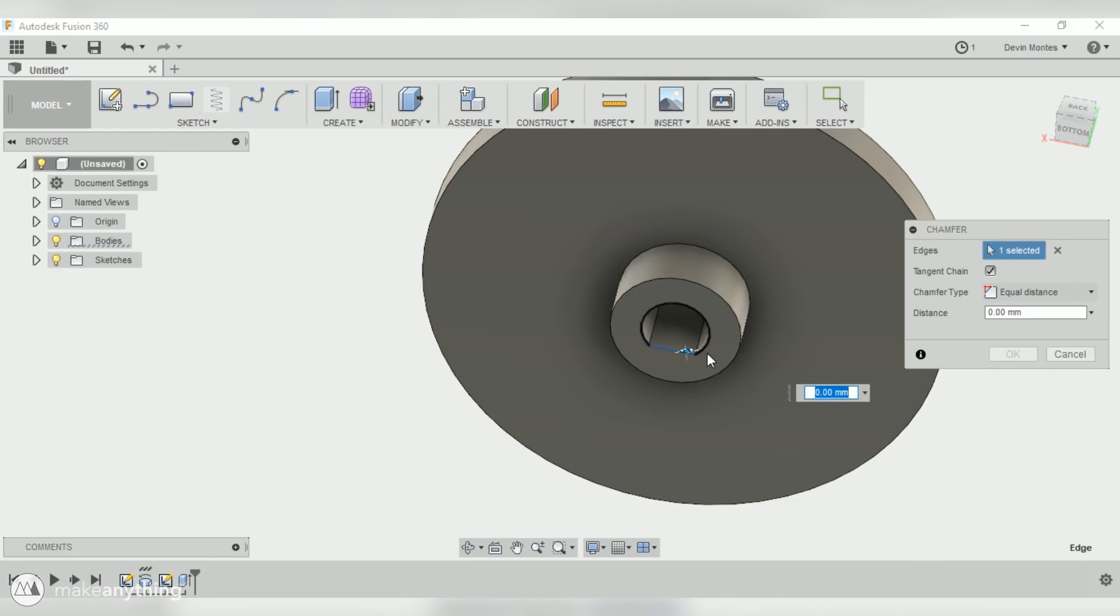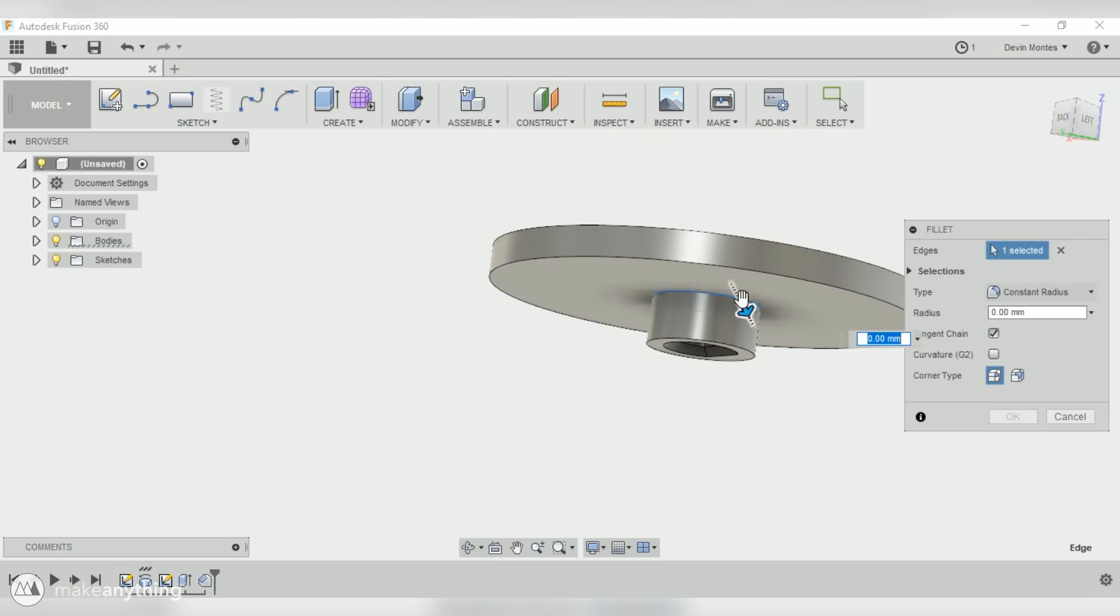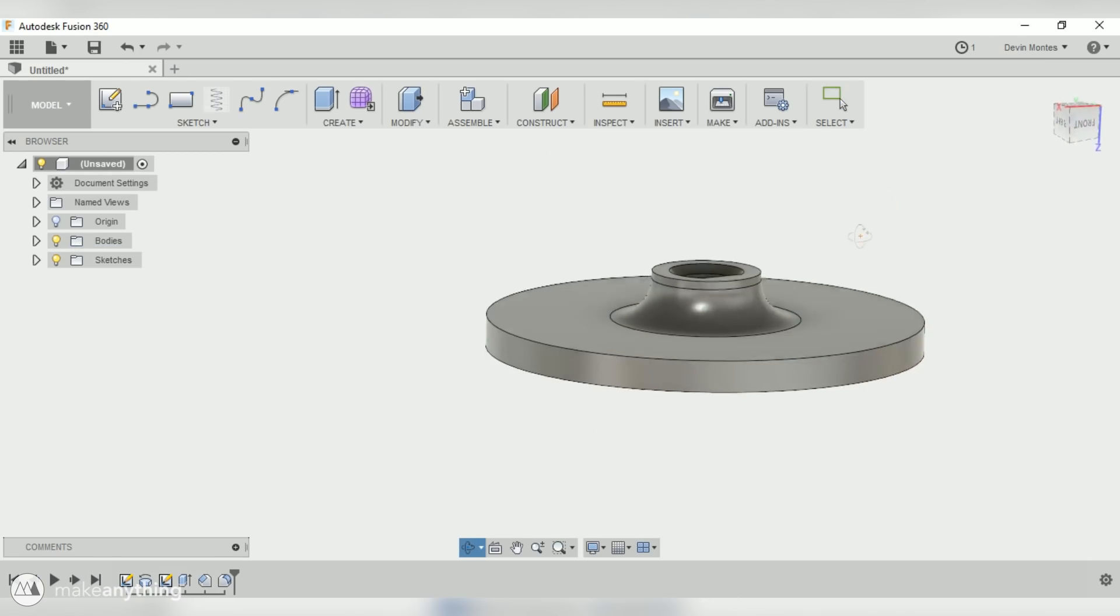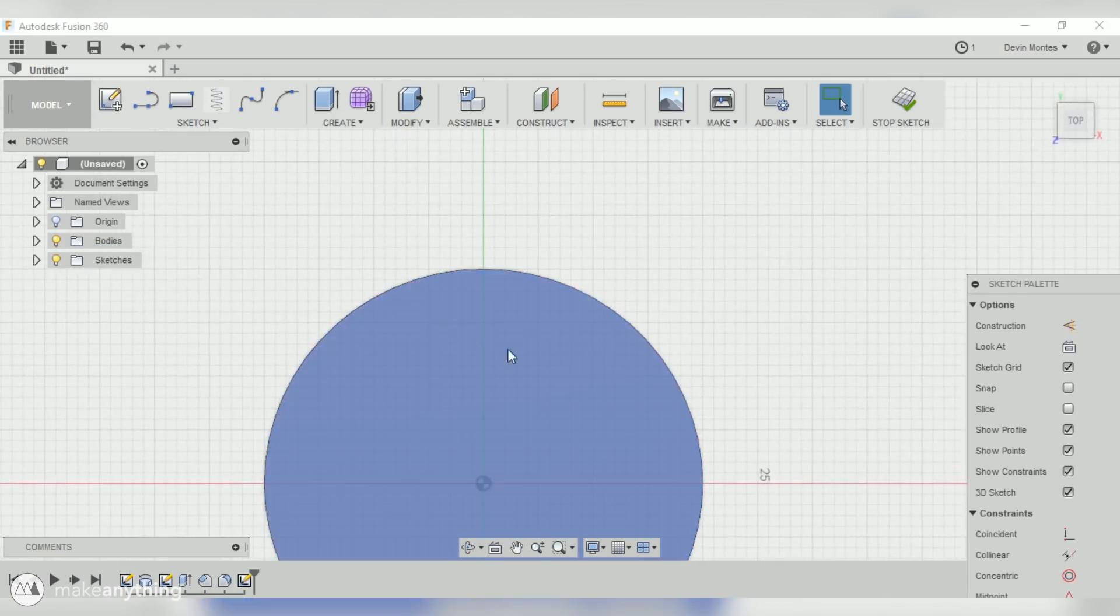But first of all, I'm going to add a chamfer here to make it a little bit easier to slip this over that stepper motor. And then we'll go ahead and add a big fillet right here to make this nice and strong, make sure it doesn't snap.